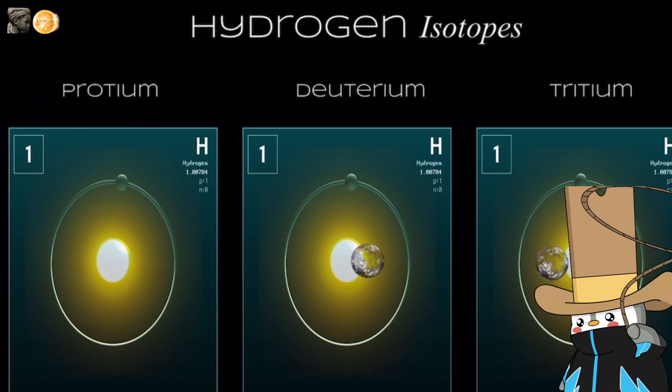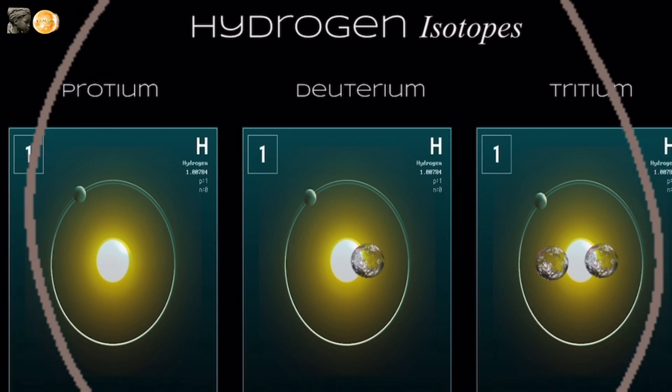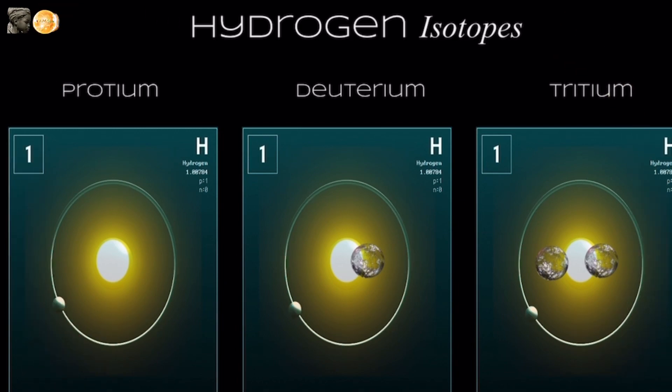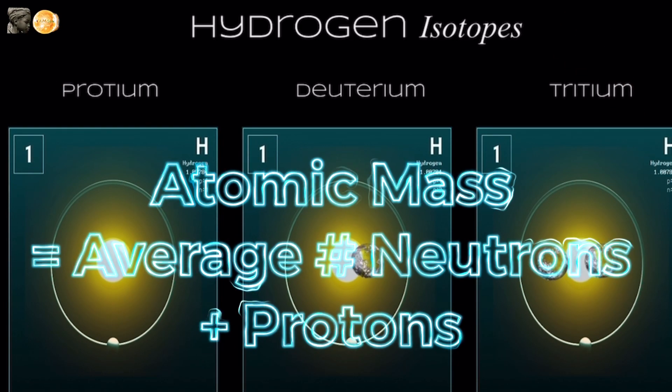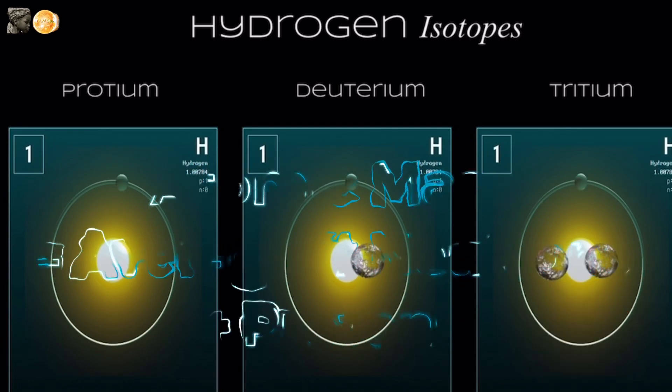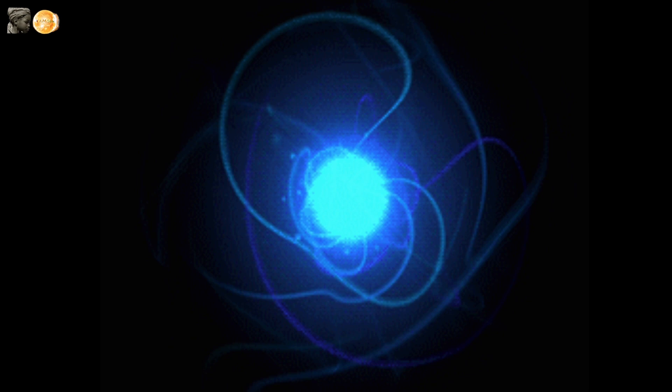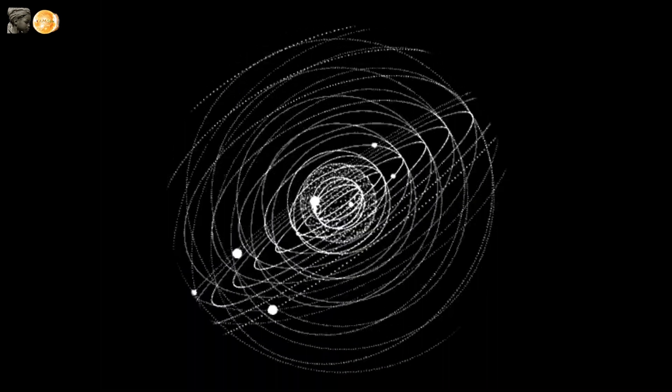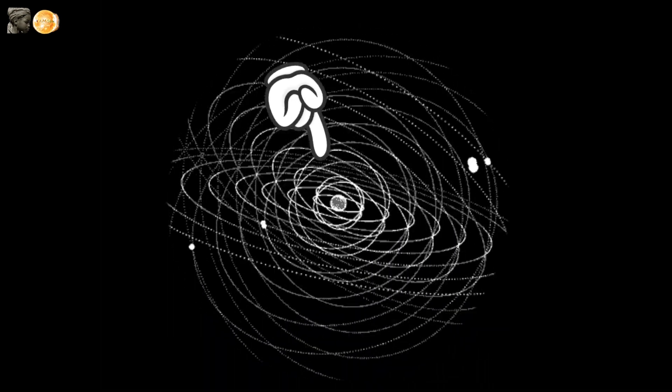Now, when we average the amount of neutrons in different atom versions with the same stable amount of protons, we call that the atomic mass. Why don't we calculate the mass of electrons? Well, because they're so ridiculously and magically light, most of the mass of the atom is in the nucleus.